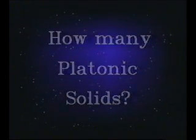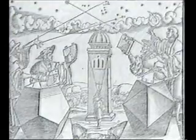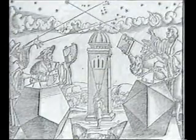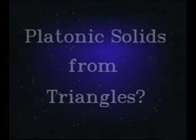Over 2,000 years ago, a mathematician named Euclid wrote a book called The Elements. This book is the basis for most of today's high school geometry courses. The grand finale of The Elements is a section about the Platonic solids, in which Euclid shows there are exactly five. His explanation goes something like this.